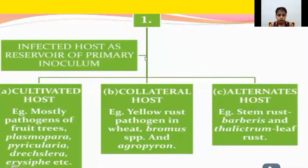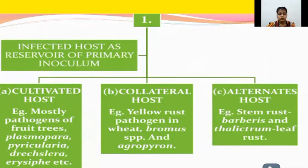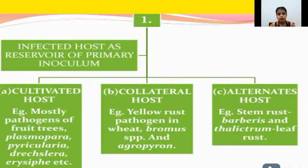The infected host serves as a reservoir of primary inoculum. There are three types of infected hosts: cultivated host, collateral host, and alternate host. Cultivated host is the main crop host — for example, wheat grown for cultivation. Collateral host is a host from the same family as the infected host. Alternate host is used for pathogen survival when there is an absence of any cultivated or collateral host.